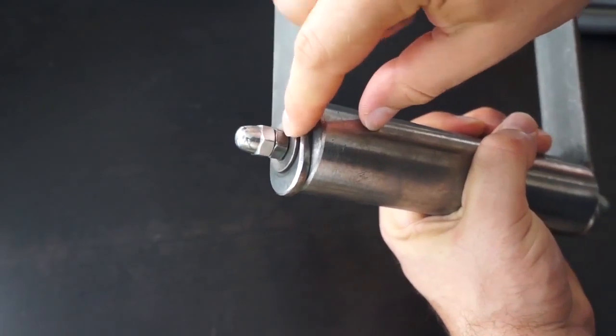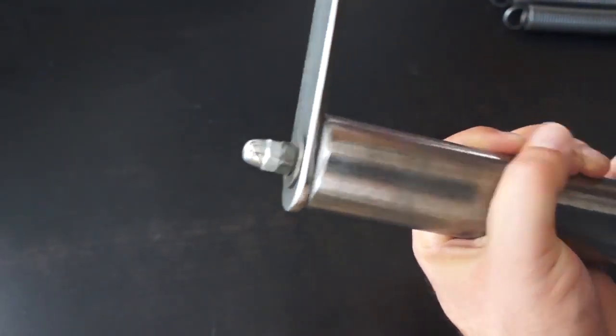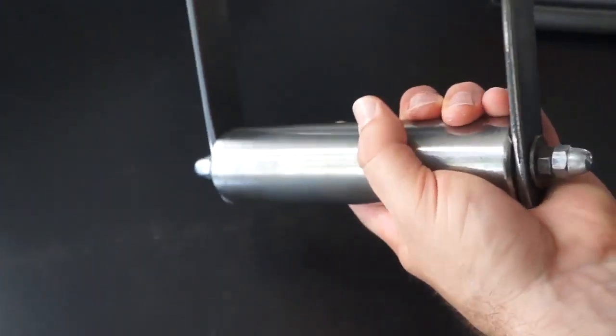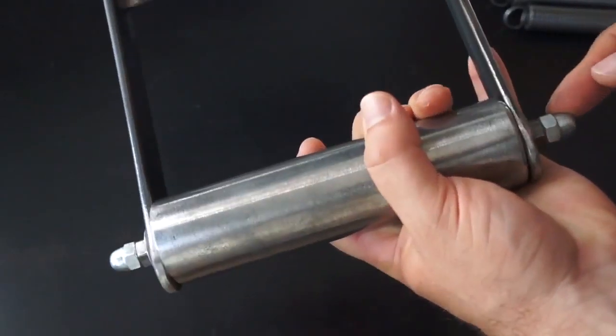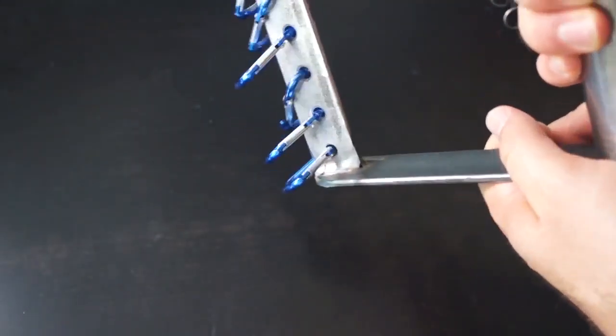Hier oben mit einer Unterlegscheibe, einer Mutter und einer Endkappe verschraubt, auf beiden Seiten. Das ist eine durchgängige Schraube, eine Gewindeschraube einfach, ein Gewindestab, und der hält das Ganze an seinem Platz.